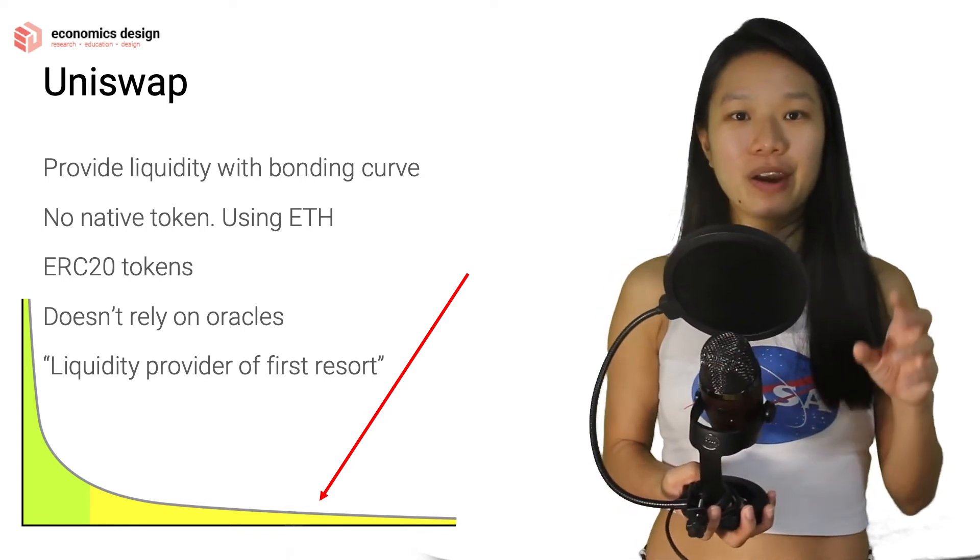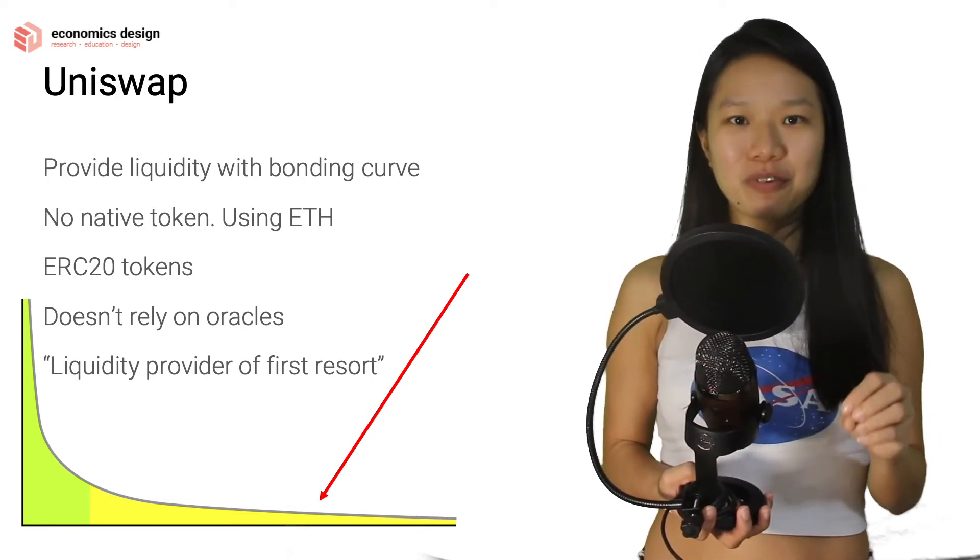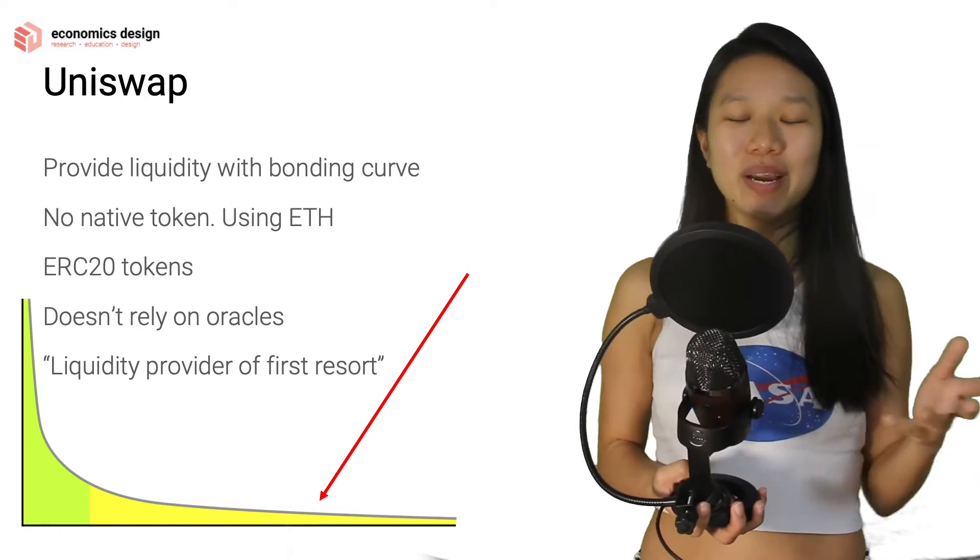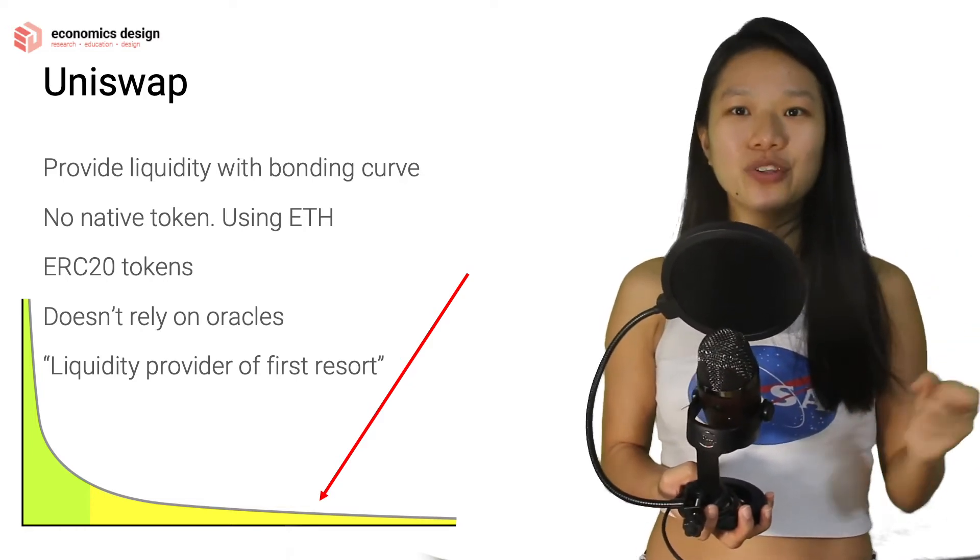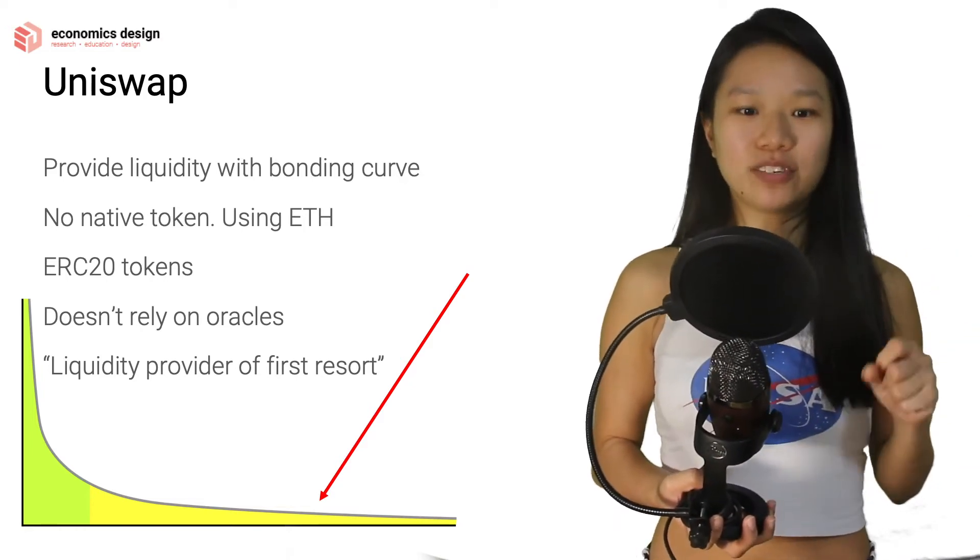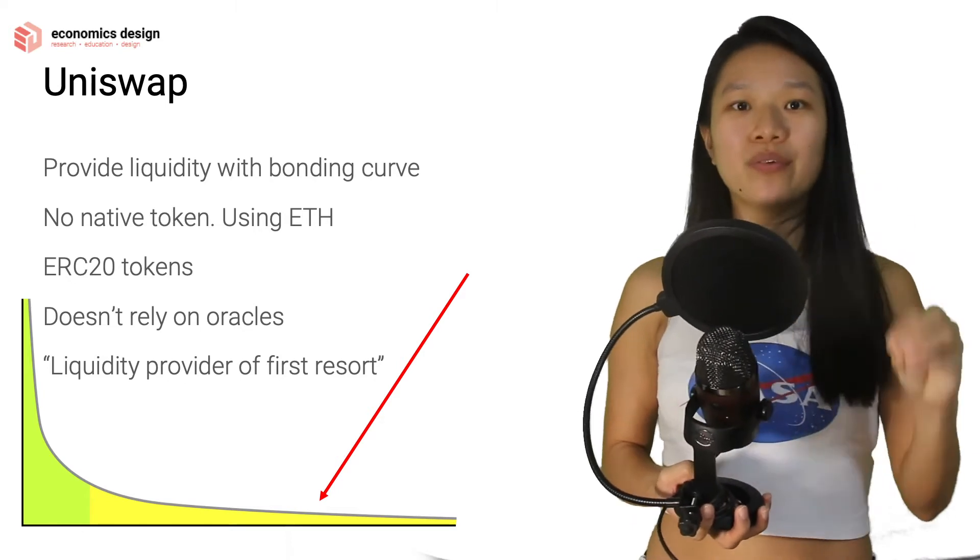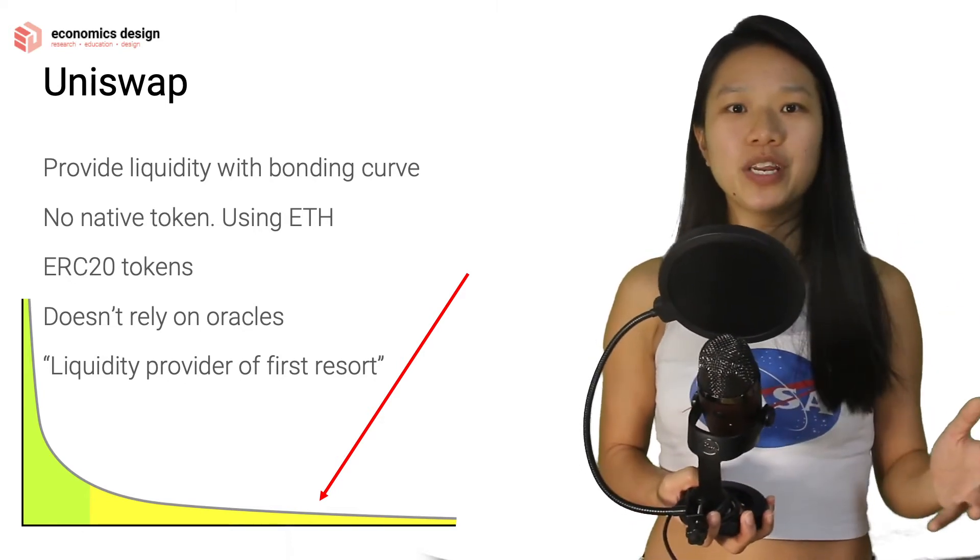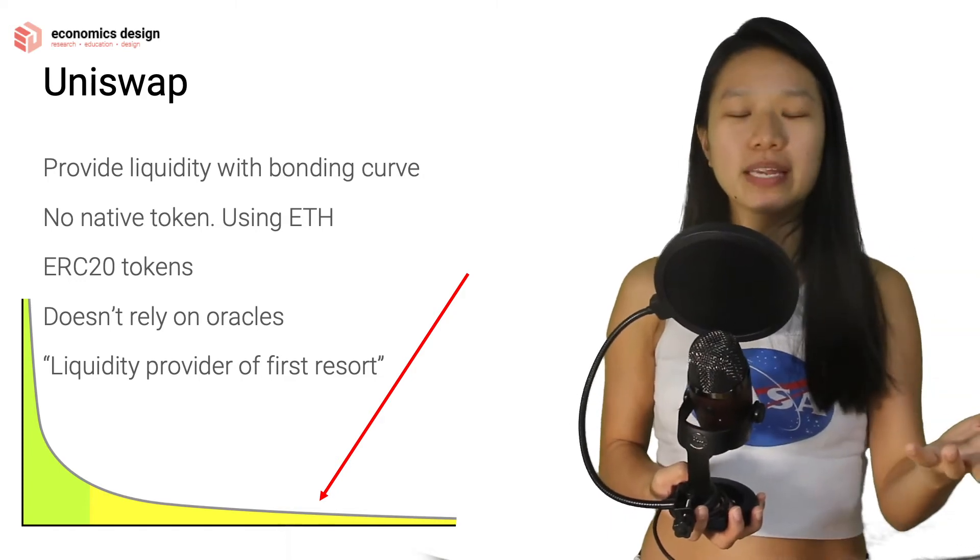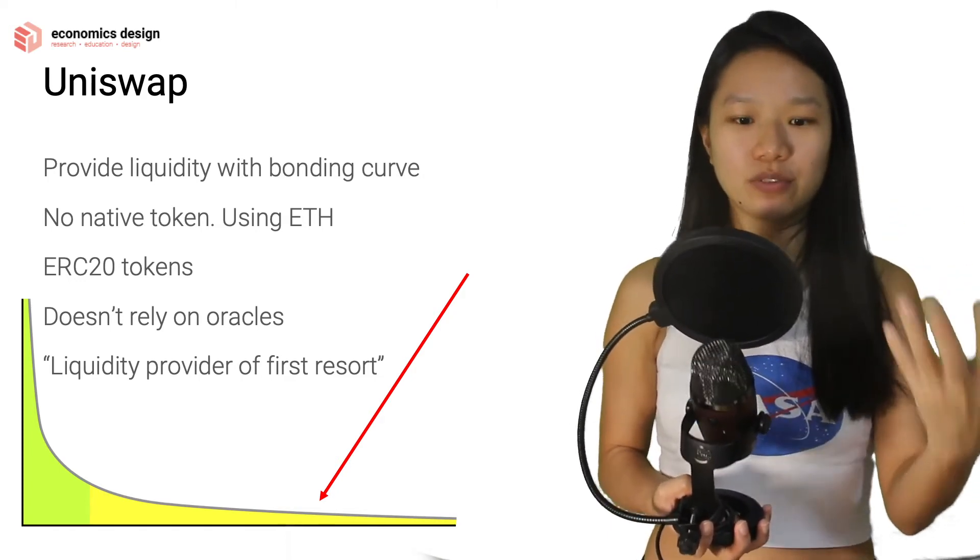I saw someone comparing DEXs to liquidity provider of first resort, which is quite interesting because in the real world, you have central banks as the lender of last resort. What does it mean in the real world? It means that if everyone stops lending you money, the central bank will still keep lending you money because they are the lender of last resort.